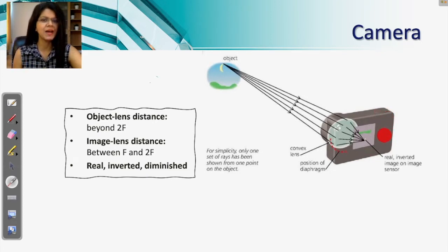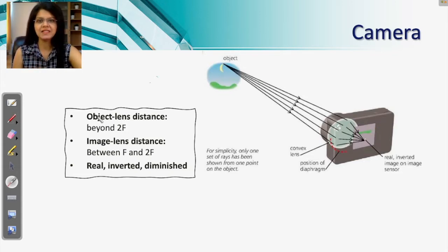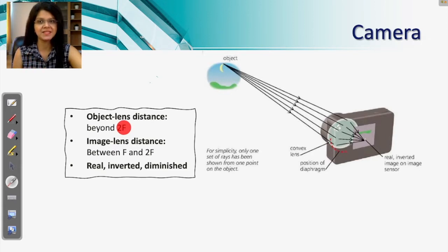Nowadays you have cameras on your mobile phones as well. Wherever you have a camera, you have a lens inside. Behind the lens, you have a film on which the image is created. In mobile phone cameras, this film is a digital film. The object you are clicking a picture of must be beyond 2f — that is a compulsory necessity — and the image is always formed between f and 2f. The image is always real, inverted, and diminished.